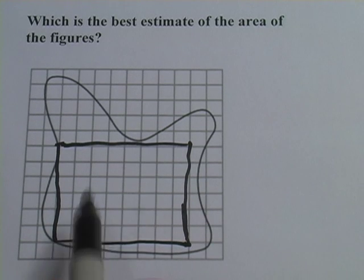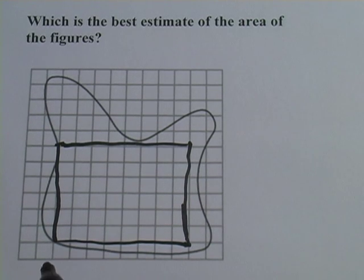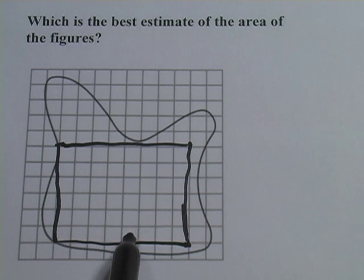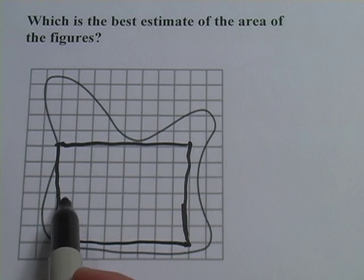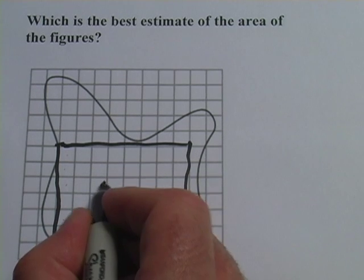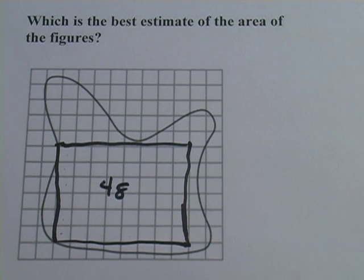And now I have a big chunk of this already figured out. This is 1, 2, 3, 4, 5, 6, 7, 8 by 1, 2, 3, 4, 5, 6. 6 times 8 is 48. So this chunk in here is 48 units.